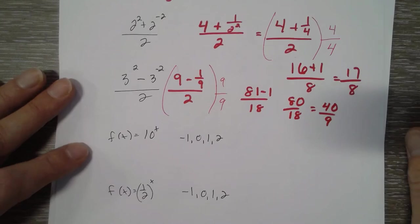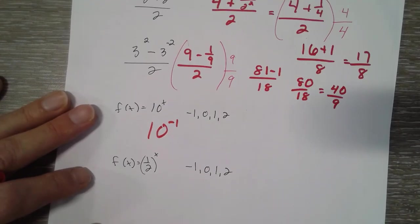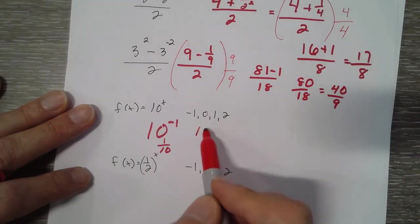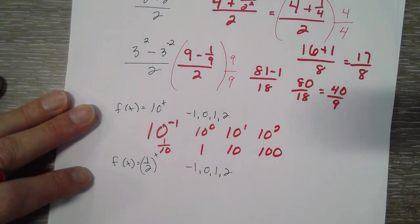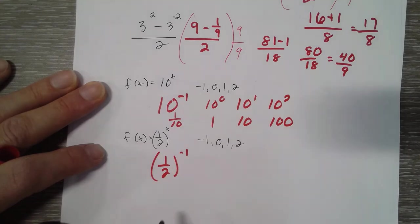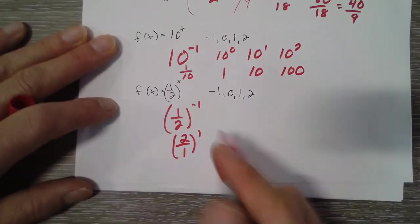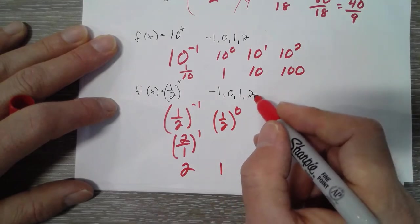Now for 10 to the x: 10 to the negative 1 is 1 over 10, which is 0.1. 10 to the 0 is 1 — anything to the 0 is 1. 10 to the 1st is 10, 10 to the 2nd is 100. For 1/2 to the negative 1: with a negative exponent on a fraction, you flip it, so it becomes 2 to the 1st, which is 2. 1/2 to the 0 is 1, 1/2 to the 1st is 1/2, and 1/2 to the 2nd is 1/4.